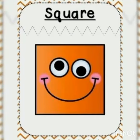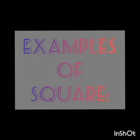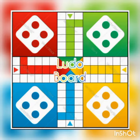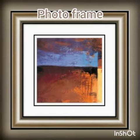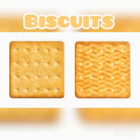Square. It has four corners and four equal sides. Some examples of square shape are Ludo board, Photo frame, and Biscuits.